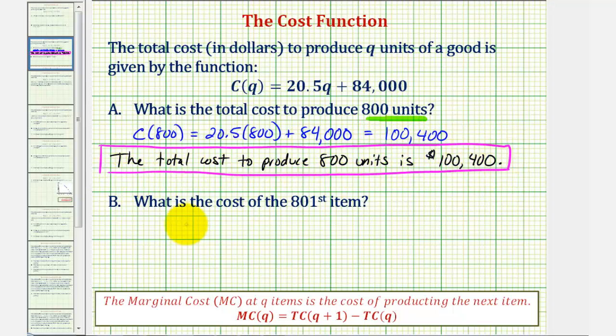For part B, what is the cost of the 801st item? To find the cost of just the 801st item, we'll find the total cost of 801 items and then subtract the total cost of 800 items. This is often called the marginal cost at Q equals 800, which is the cost of producing the next item when Q equals 800.